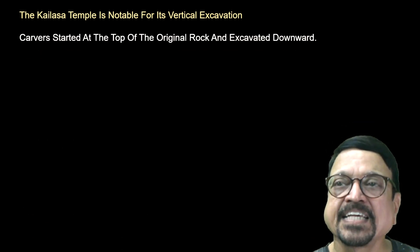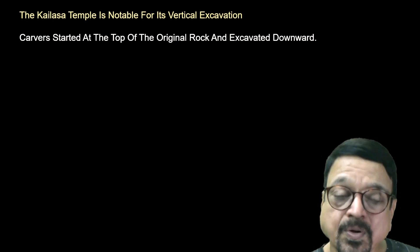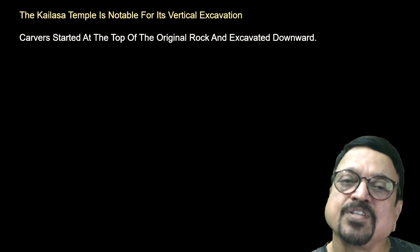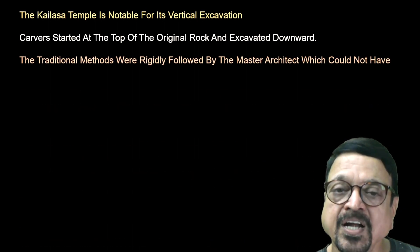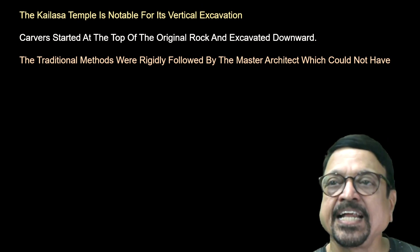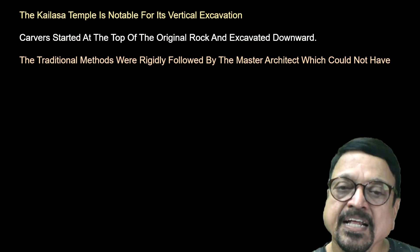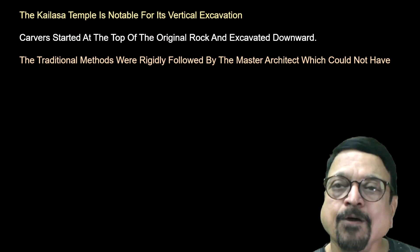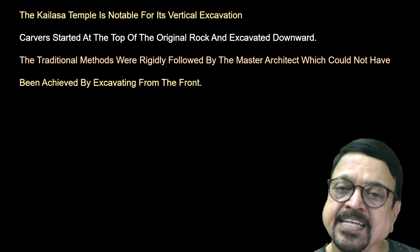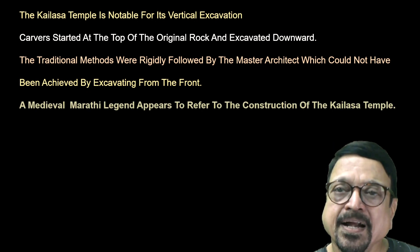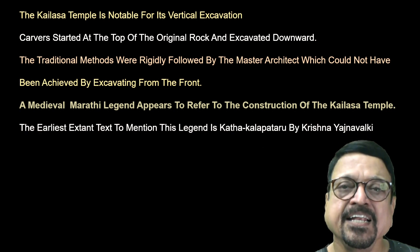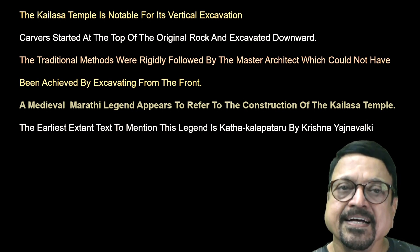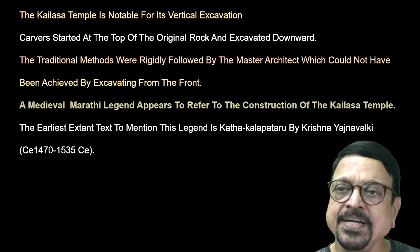Now, looking at some historical aspects of the Kailasa Temple: the Kailasa temple is notable for its vertical excavation. The carvers started at the top of the rock and came subsequently down — this is the only example in the world where construction proceeded in the opposite direction, from top to bottom rather than the traditional method of going from the ground up. A medieval Marathi legend refers to the construction of the Kailasa temple — the earliest mention is the legend Katha Kalpataru by Krishna Yajnavalkya, dated CE 1470 to 1535.